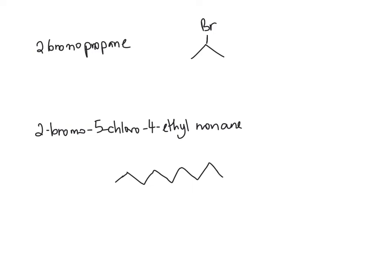So on my second carbon in, I've got a bromine. On my fifth, so one, two, three, four, five, on my fifth carbon, I have a chlorine. And on my fourth one, I have an ethyl. So that's one, that's methyl, that's ethyl. So that is a line diagram for 2-bromo, 5-chloro, 4-ethyl, nonane.